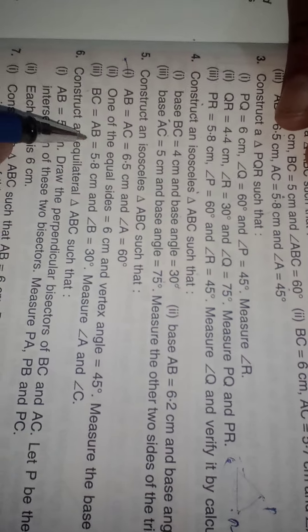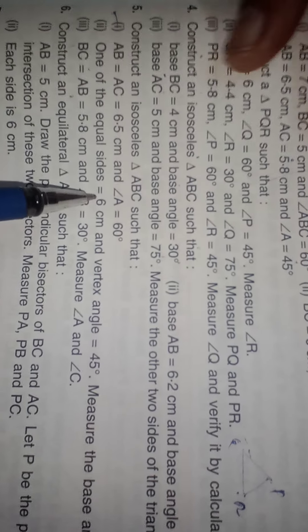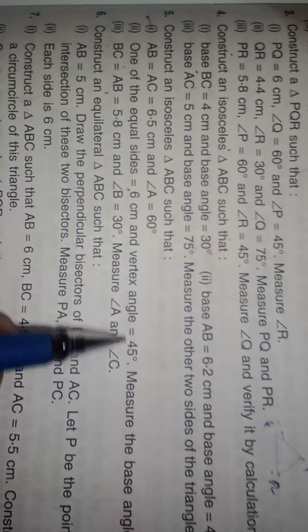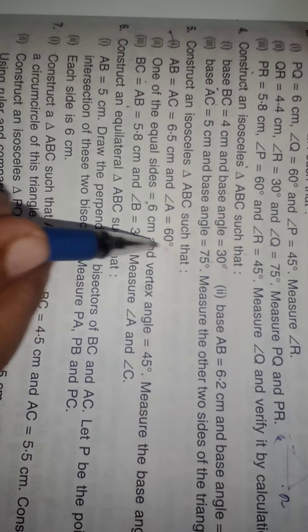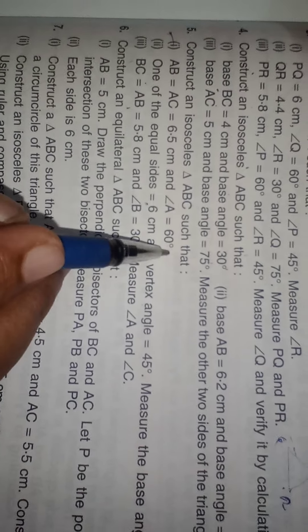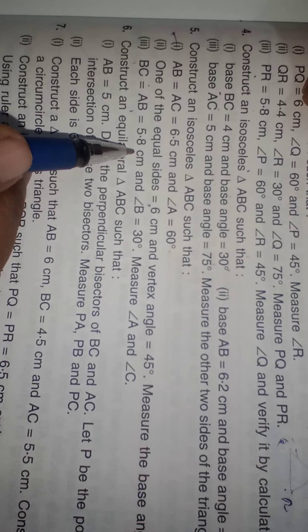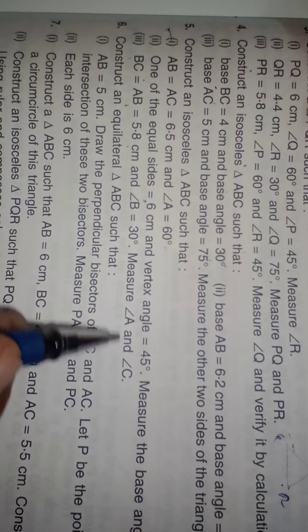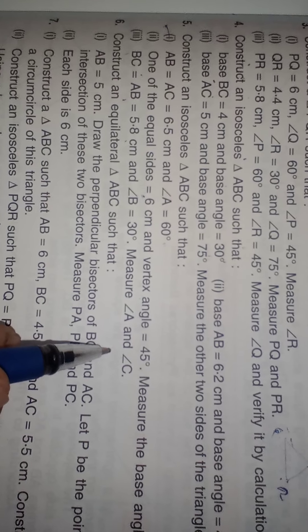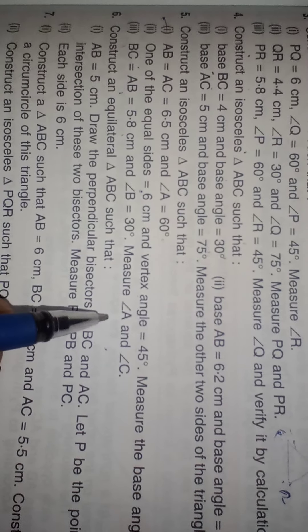I have done the first question of the sixth set for you. The remaining two you have to do yourself. Second: one of the equal sides is 6 cm, so the other side is also 6 cm, and the vertex angle is 45 degrees — take the rough figure just like the first one. The third one you can also easily construct.